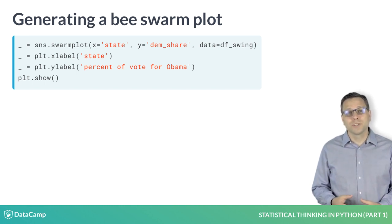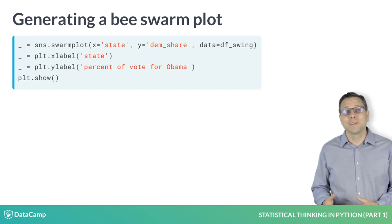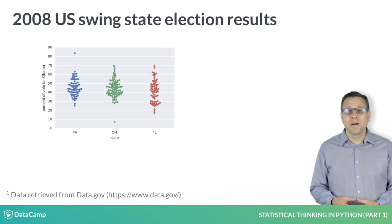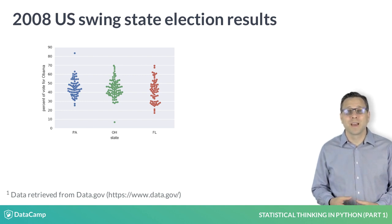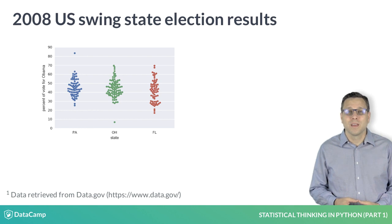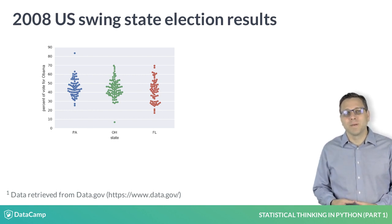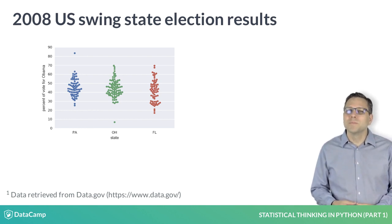And, of course, you need to tell it which data frame contains the data. From this plot, too, we can clearly see that Obama got less than 50% of the vote in the majority of the counties in each of the three swing states. This time, the plot is more detailed than the histogram, but without too much added visual complexity.